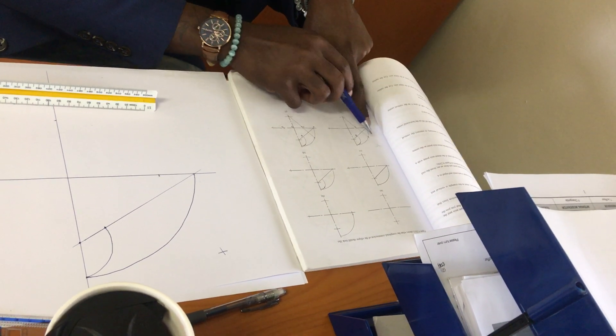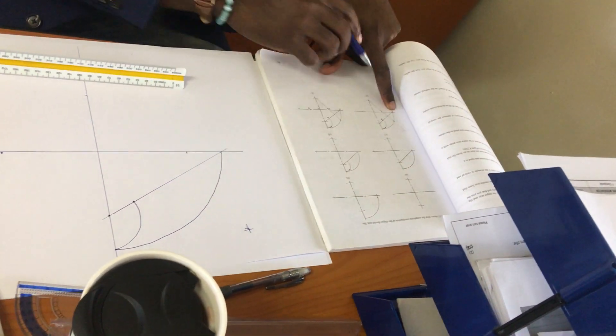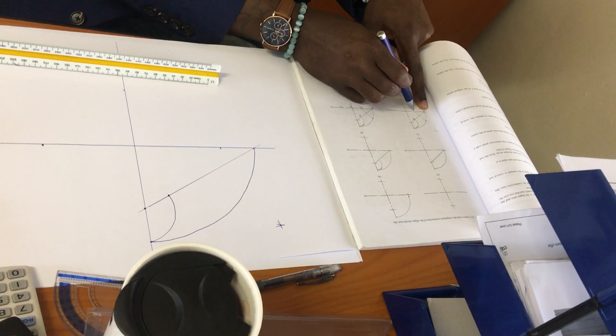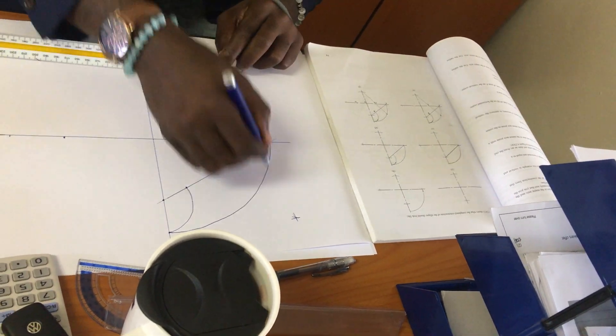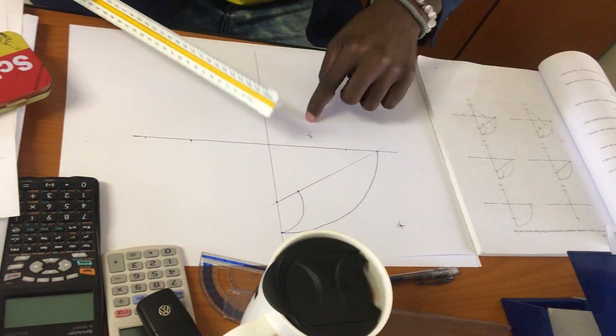From here, this measurement that you get is what you're going to put your compass on. You'll have your point which is outside the drawing, then you do another point there which is going to land somewhere here.